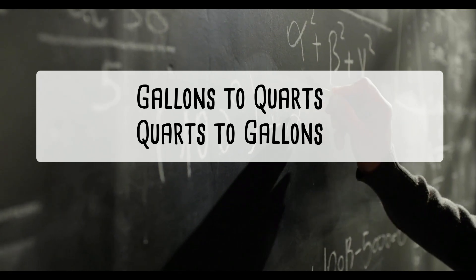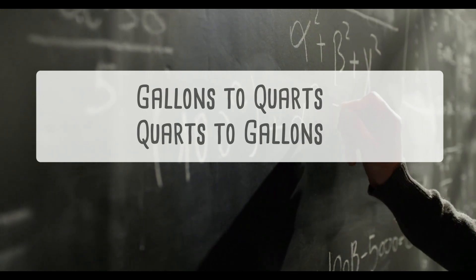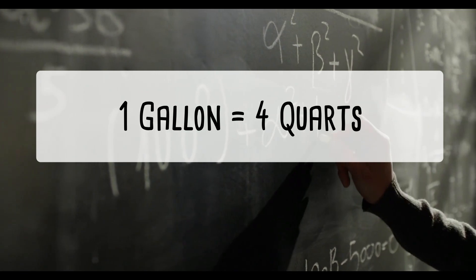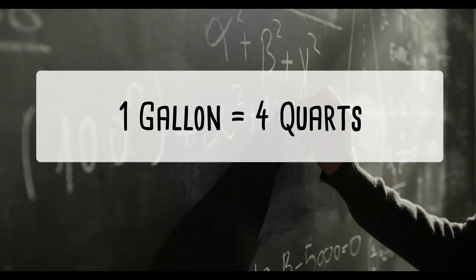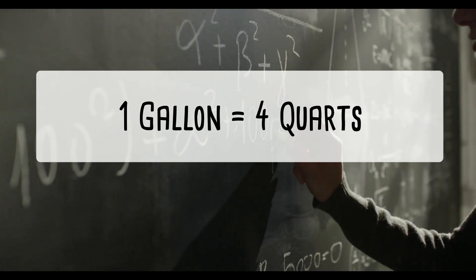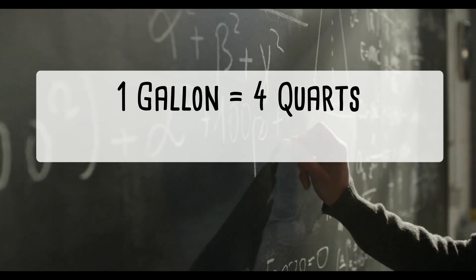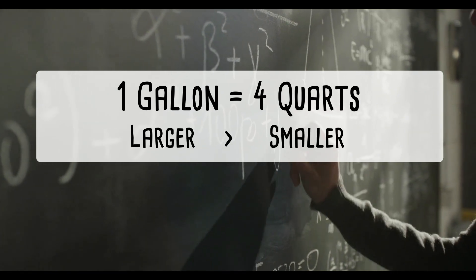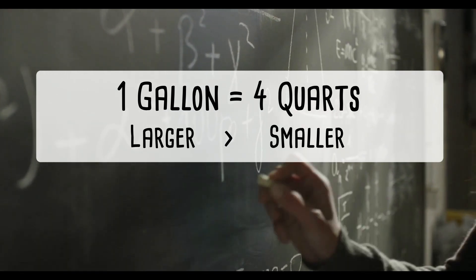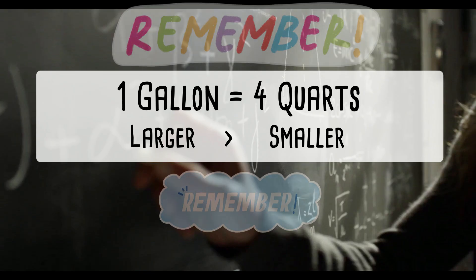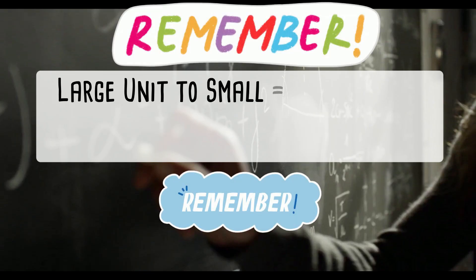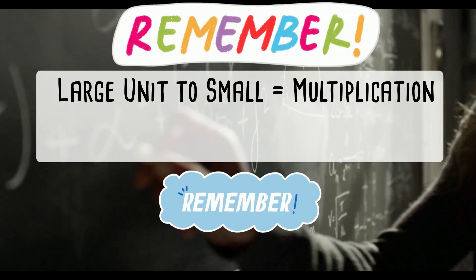Here's a hint that will help you: one gallon equals four quarts. Because it takes four quarts to make one gallon, quarts are smaller than gallons. And when you convert, when you move from a large unit to a small unit, you multiply.